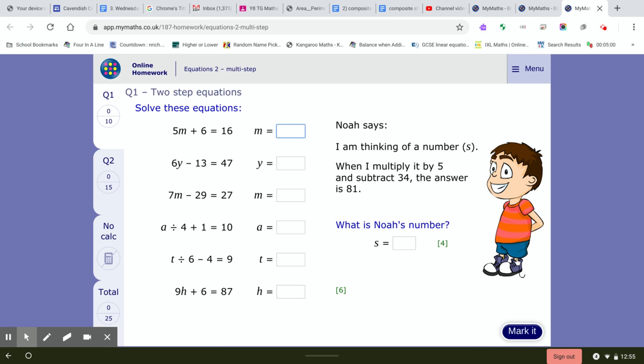Okay nice, I like practice. So if you look at the first example, 5m plus 6 equals 16. You do the opposite to plus 6, so that would be take away 6. So 5m is 10, so 1m must be 2.